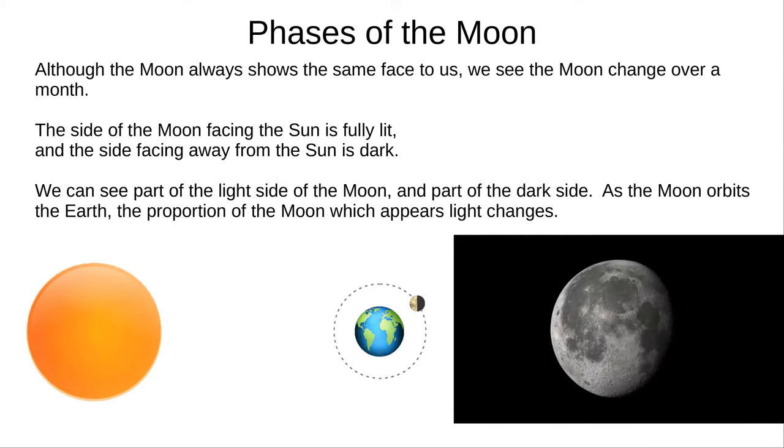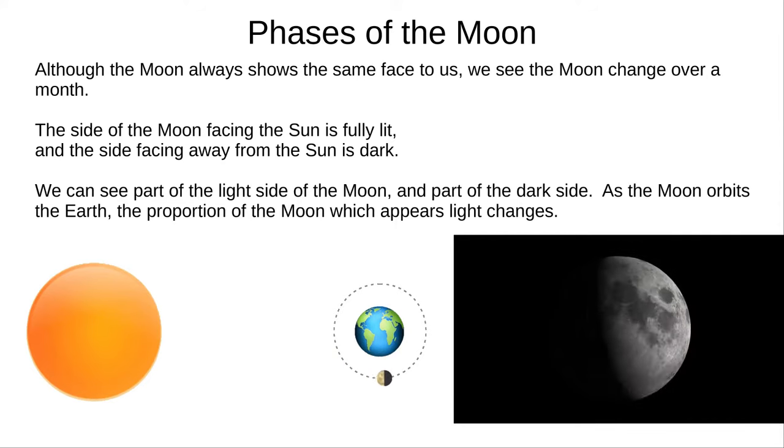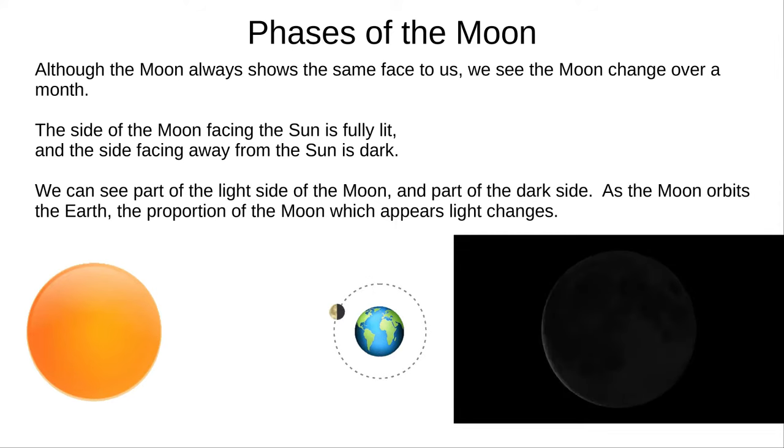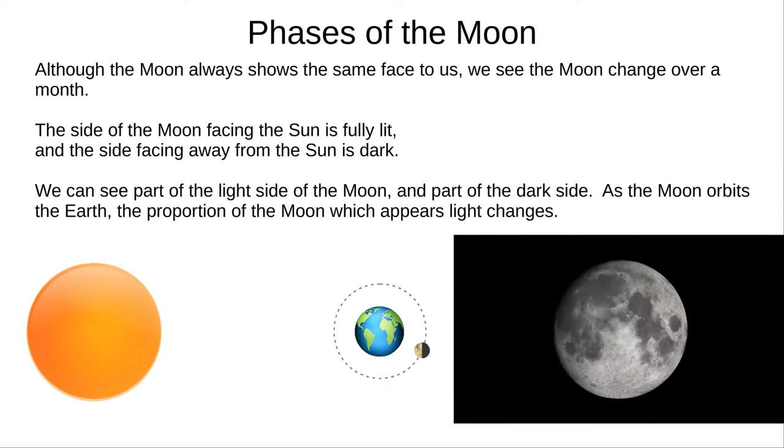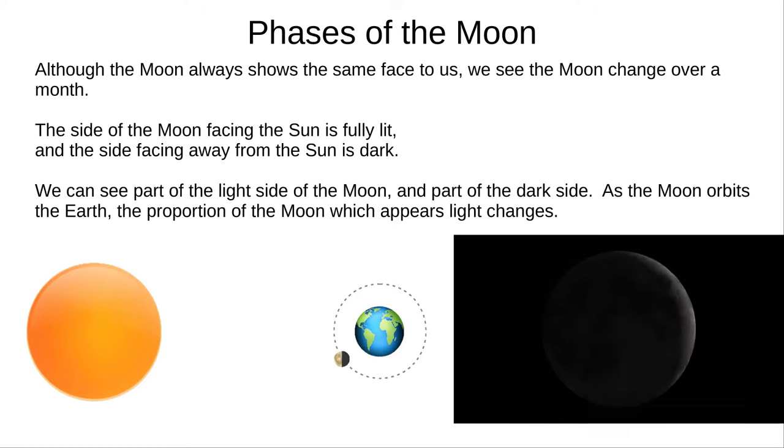We can see the Moon because it's lit by the Sun, but the Sun only lights up half of the Moon at a time. The half that we can see isn't necessarily the half that's lit up, so part of the near side is usually dark. The parts we see lit up change as the Moon orbits the Earth.